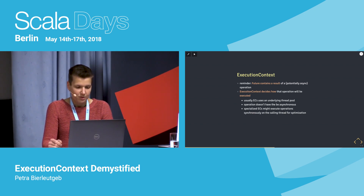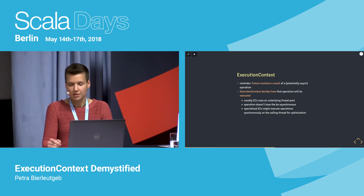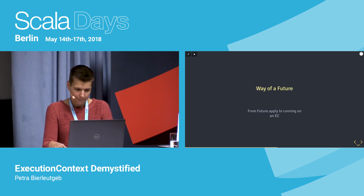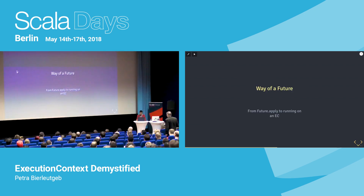Quick reminders: the Future contains the result of the operation, and the ExecutionContext decides how that operation will be executed. Usually that's done using an underlying thread pool, but it's also possible to have a special-purpose ExecutionContext that might not even run the operation asynchronously at all.